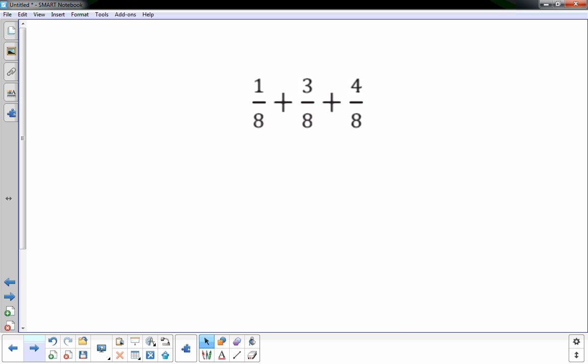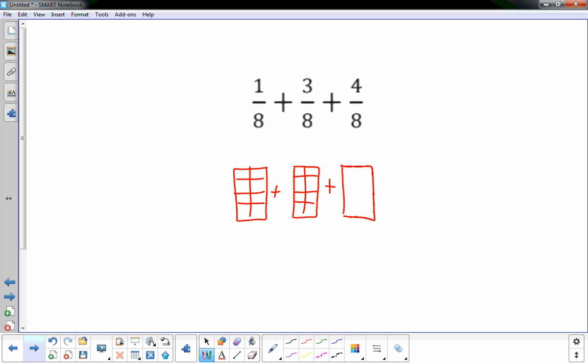1/8 plus 3/8 plus 4/8. Well, visually what we've learned is if I draw something in eighths, I'll try to do this as quickly as possible. I draw a thing, they're all the same size that represents each one: 1/8, 3/8, and 4/8. And then I would add them or fill up our thing. So 1/8 plus 3/8 plus 4/8, I would have 8/8 or one whole thing.